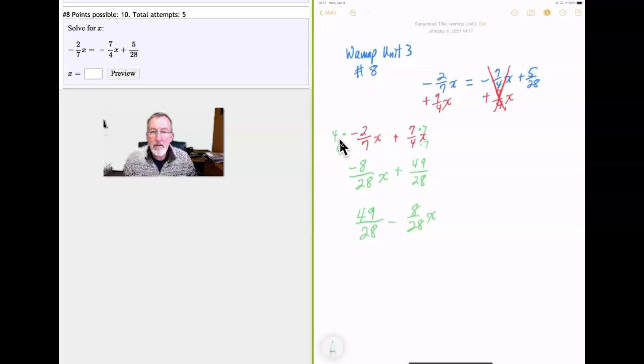So now we are adding 49/28 to negative 8/28, and we can also just write this as 49/28 minus 8/28 x. I left out the x. 49/28 x minus 8/28 x. So 49 minus 8 is 41 over 28, and that amount of x. And that's going to be equal to, we'll bring down this 5/28.